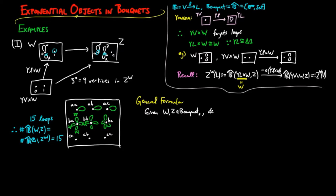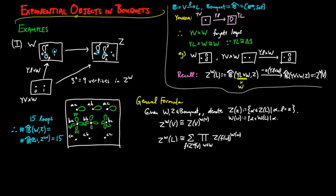If you are given bouquets W and Z, we denote the set big Z evaluated on little z as a set of petals alpha such that the boundary of alpha is z, and similarly for W. Then the set of vertices in Z to the W is the exponent ZV to WV taken in the category of sets. The set of petals is the coproduct indexed by the set of vertices in Z to the W of the product indexed by the vertices in W of Z on f to the W to the W little w, with the action by projection to the coproduct index for its L action.